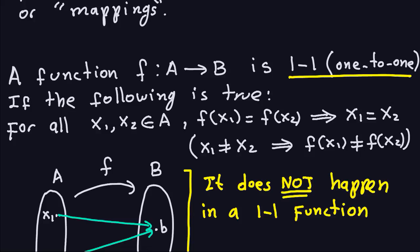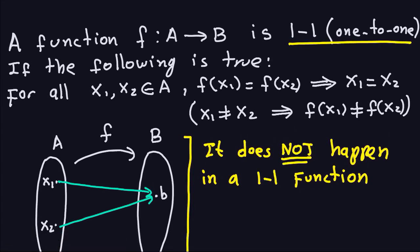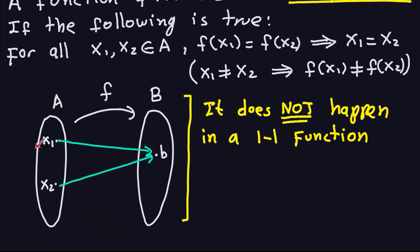If you were to prove that something is one-to-one, you would use that definition. But to understand what one-to-one functions are, let's look at the picture. I have my collection of inputs A, my transformation F, and outputs B. The situation where X1 and X2 go to exactly the same output cannot happen in a one-to-one function. So every time you see two different inputs going to the same output, it's not a one-to-one function. It is one-to-one if this never happens — if different inputs always have different outputs.